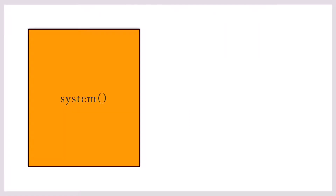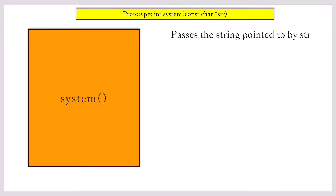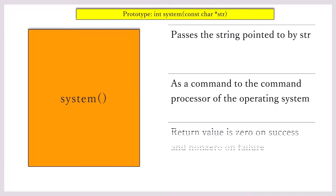Coming down to the next function, which is the system function, and we have used this before. You can see from the prototype this function returns an integer and takes as argument a string pointer. It passes the string pointed to by str as a command to the command processor of the operating system. The return value is zero on success and non-zero on failure.